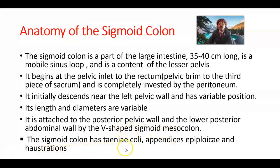The sigmoid colon has taeniae coli, appendices epiploicae, and haustra, like other parts of the large intestine.